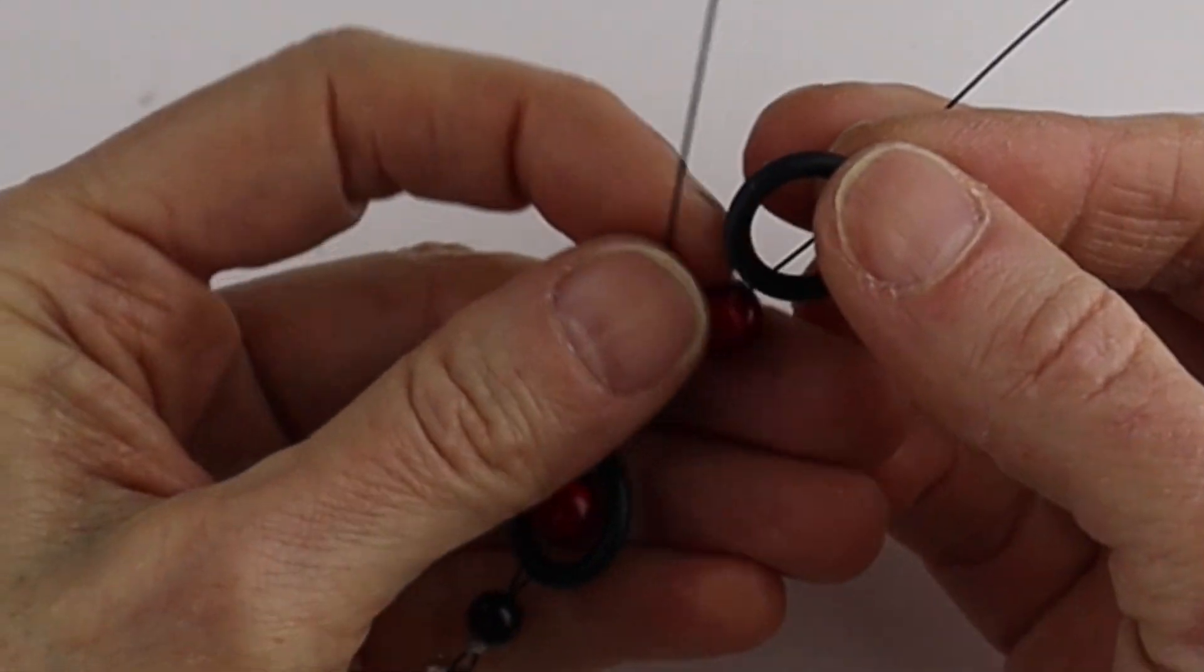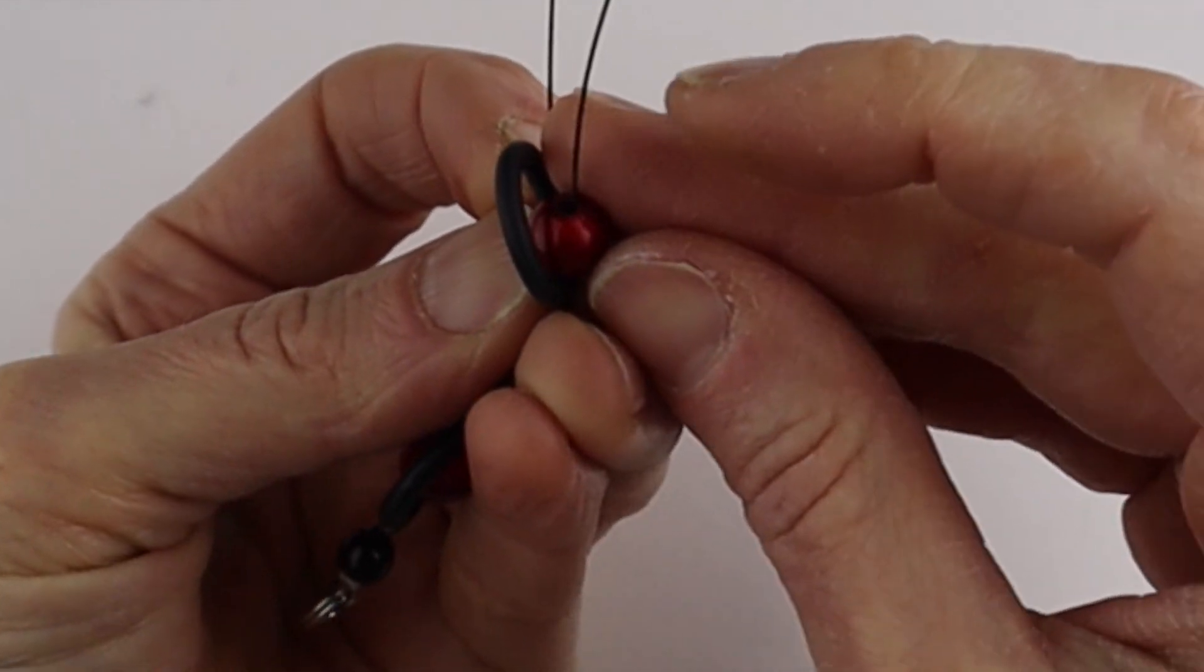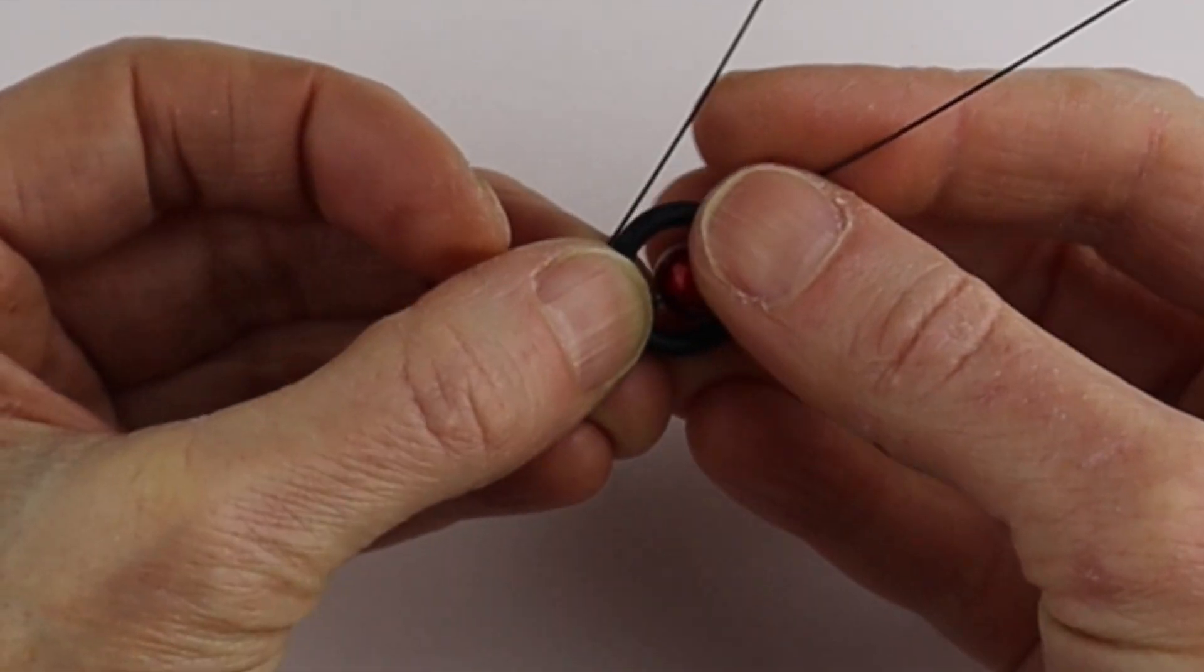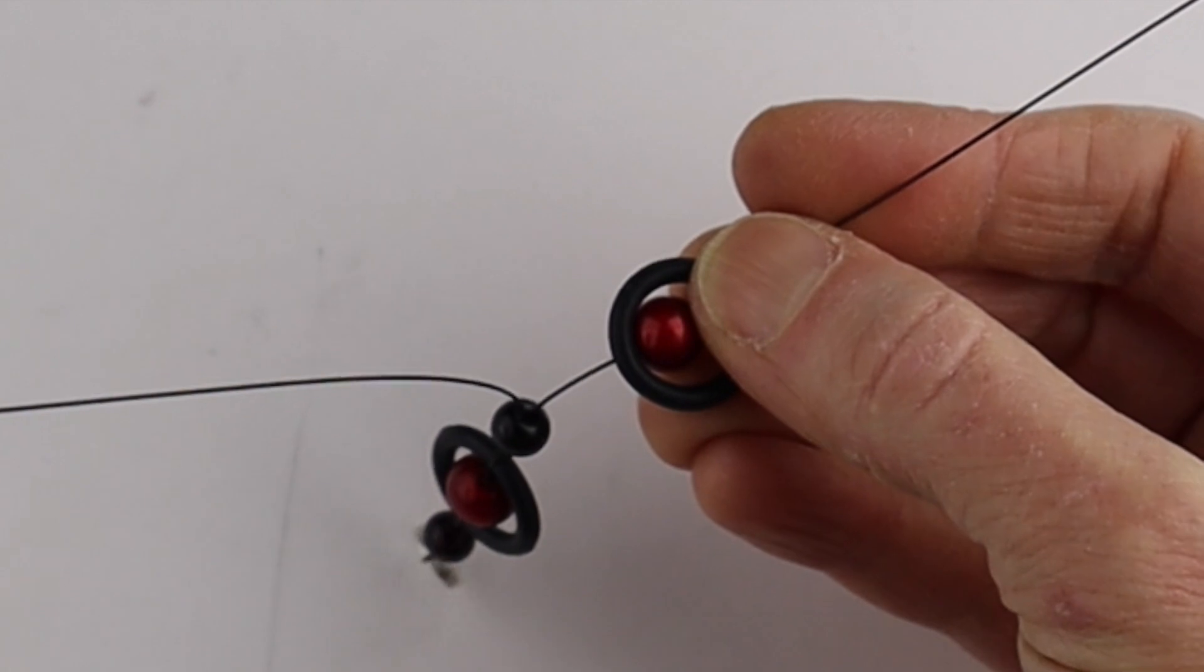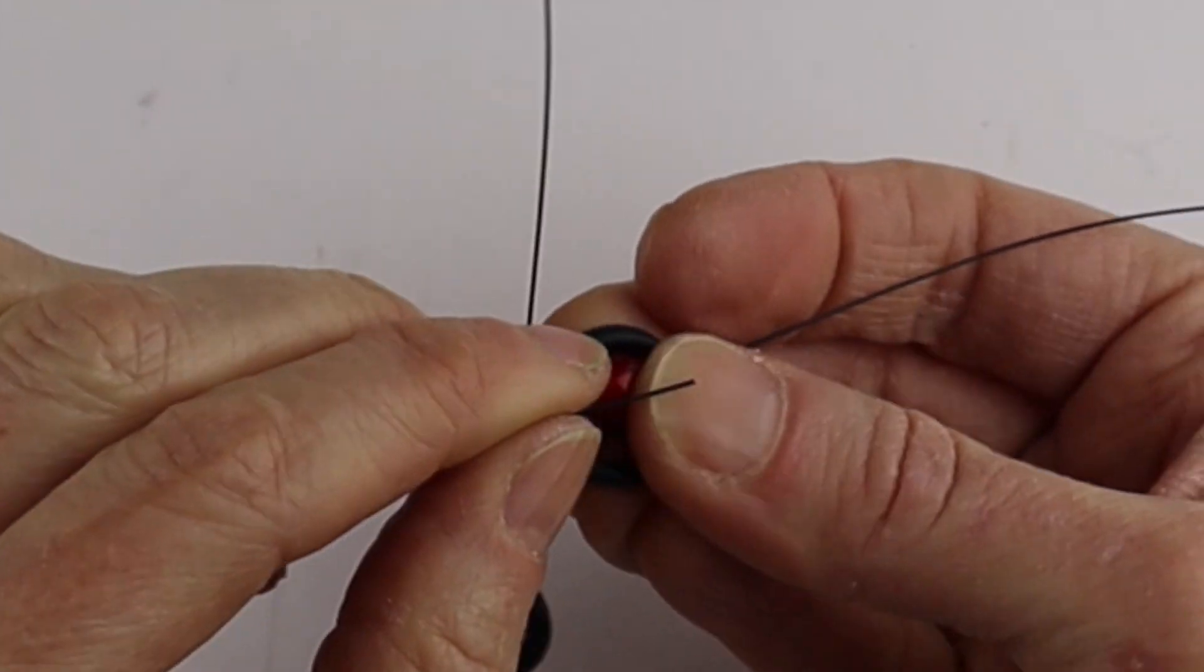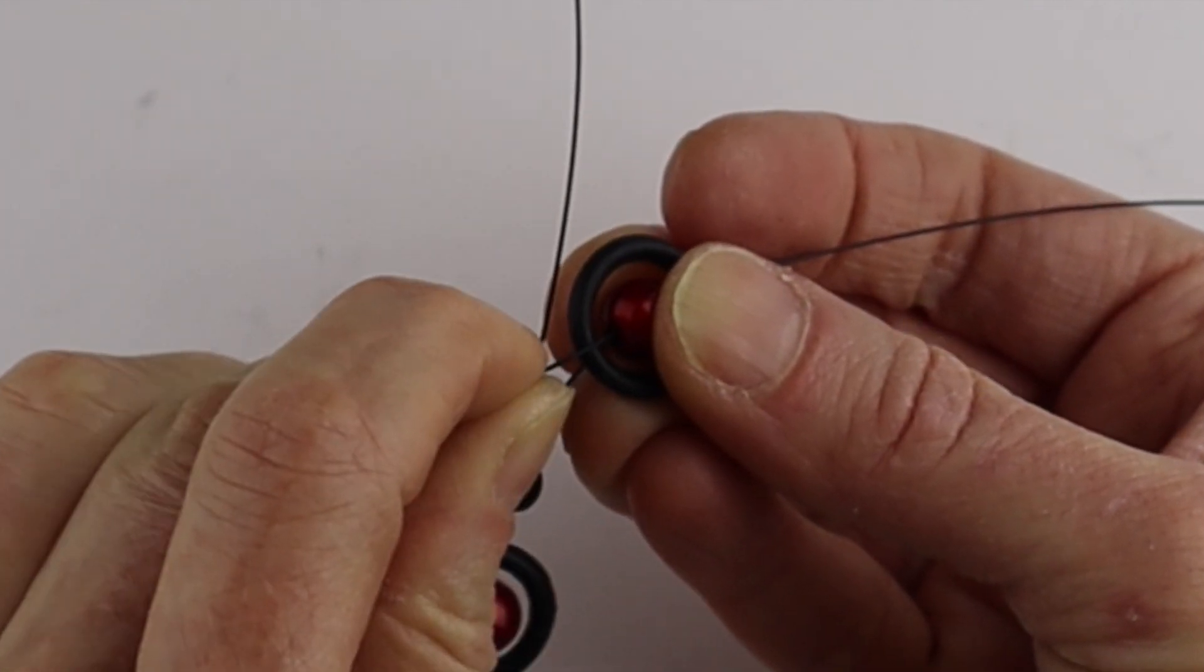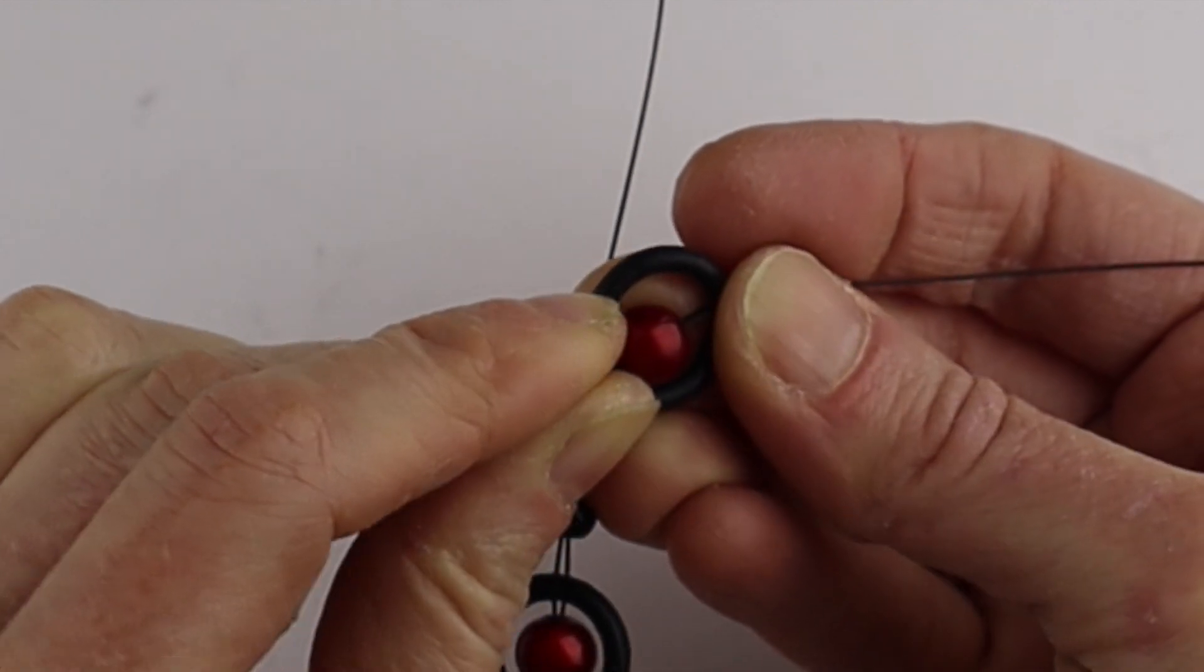Get the O-ring and put it on top so the bead and Tiger Tail are underneath. Take the end, go above the O-ring through the bead, and come out the other side.